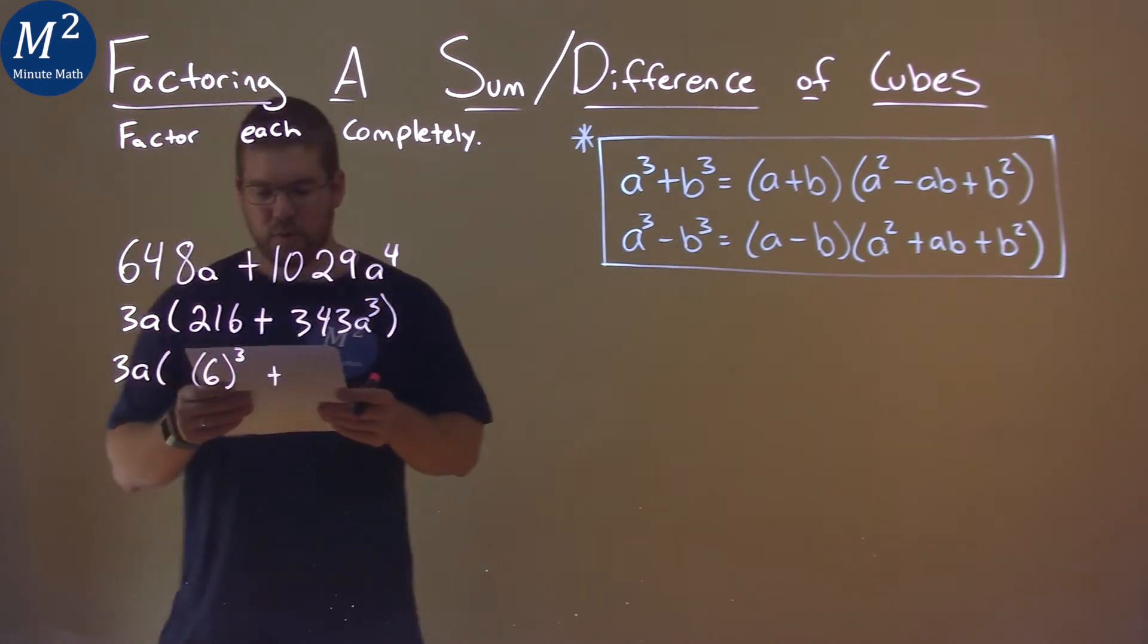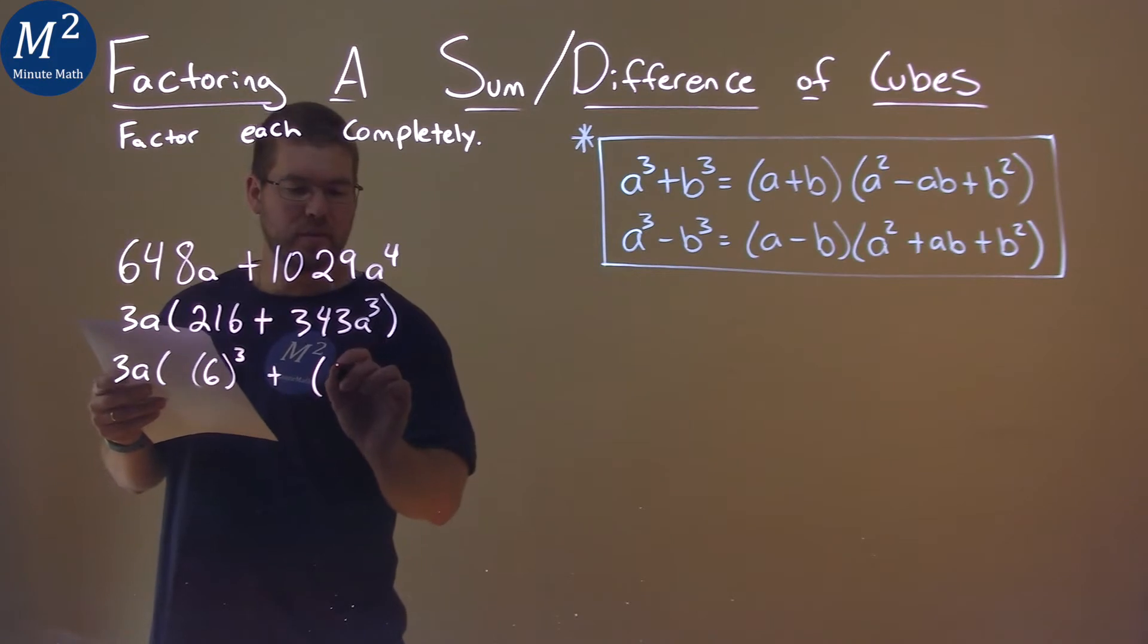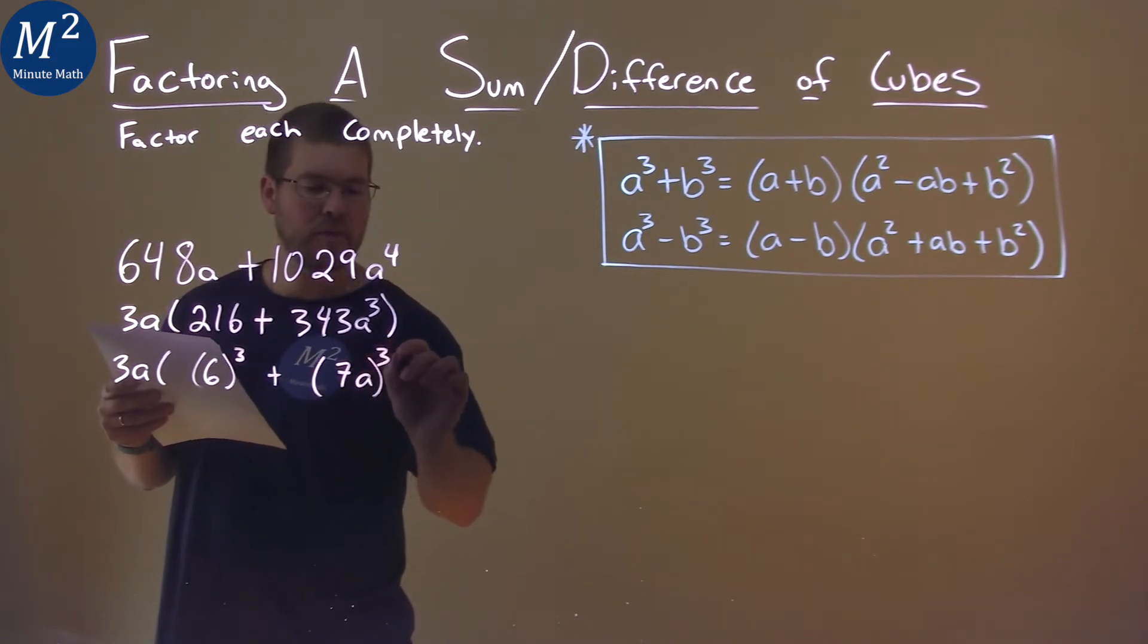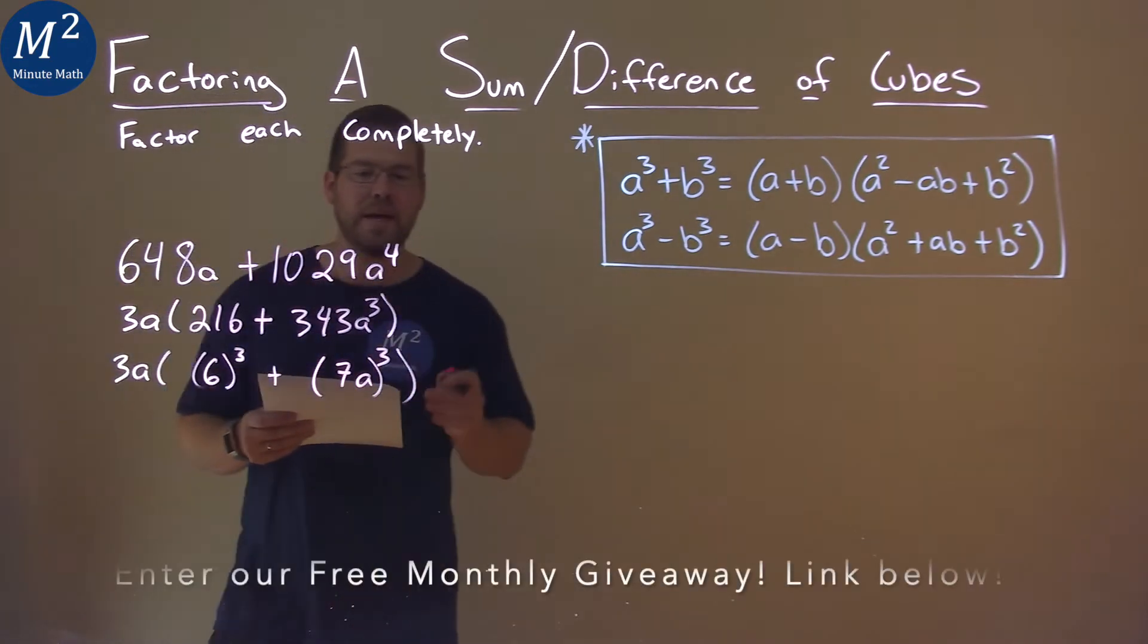Same thing with 343. Well, 343 is 7 cubed, and then a being cubed. So if we put 7a all cubed, we get 343a cubed.